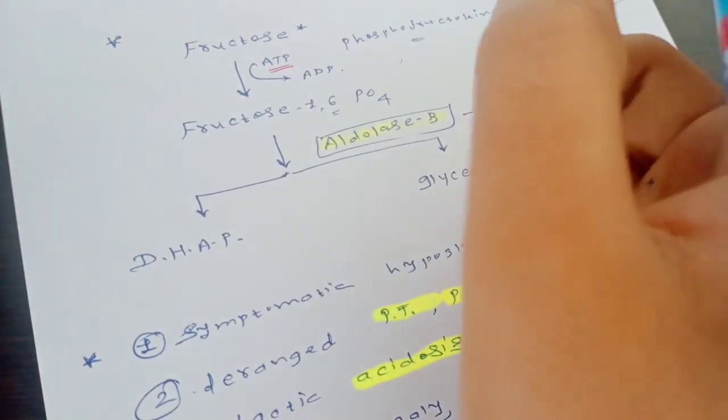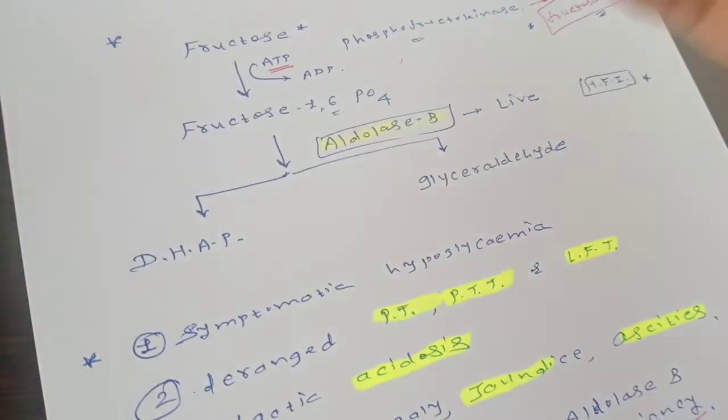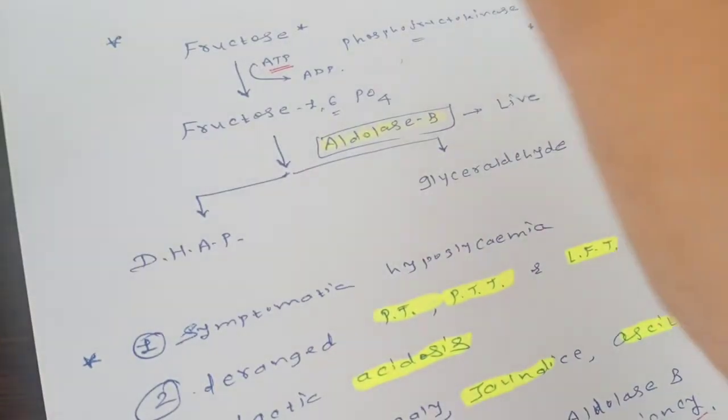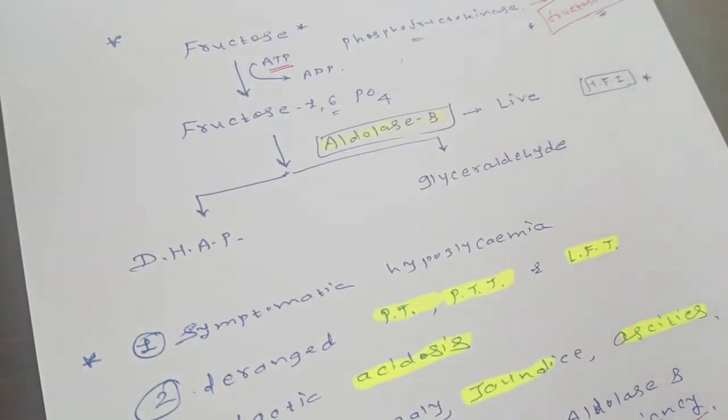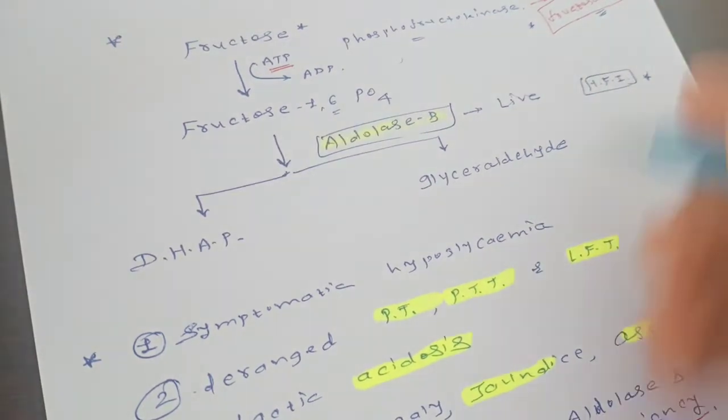So the fructose will not metabolize and will be excreted in the urine. The amount of fructose which will be taken will not be useful for ATP production in this child, and the glucose will be utilized.